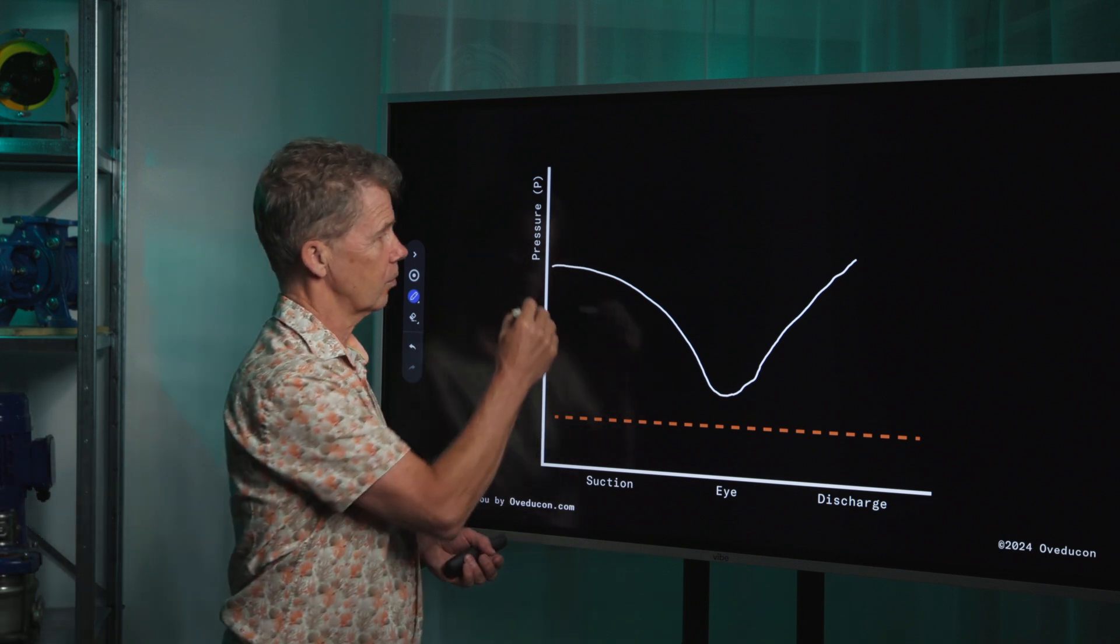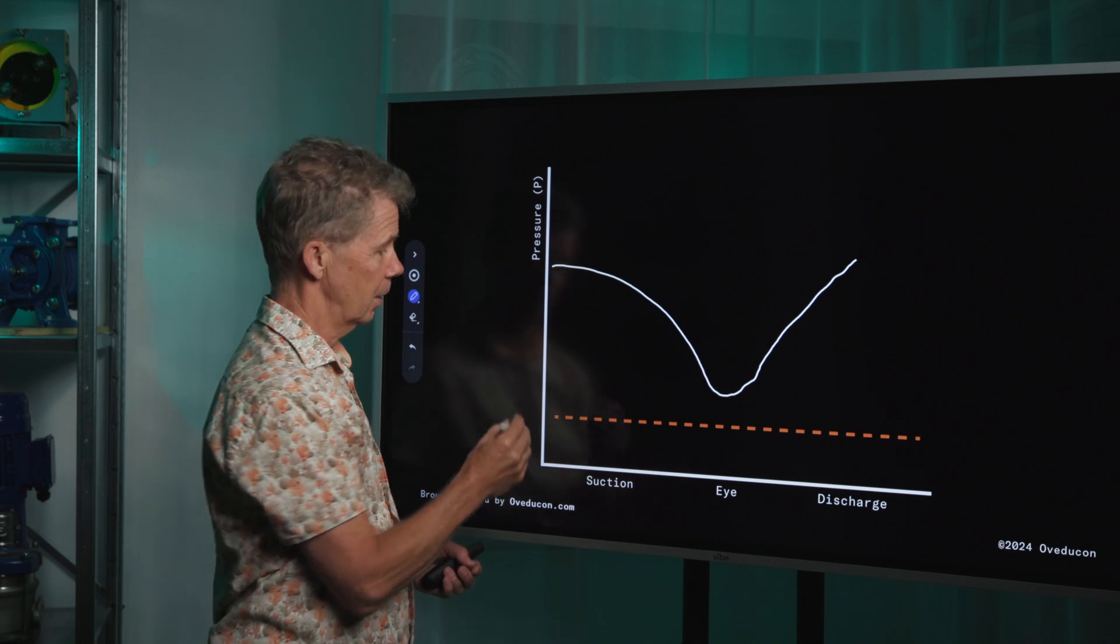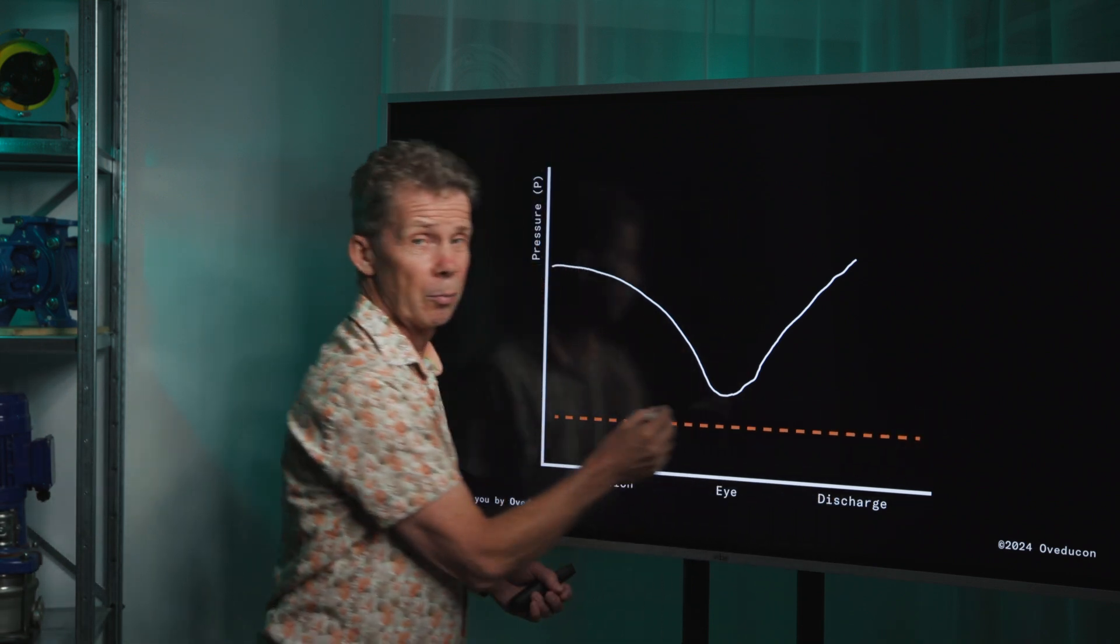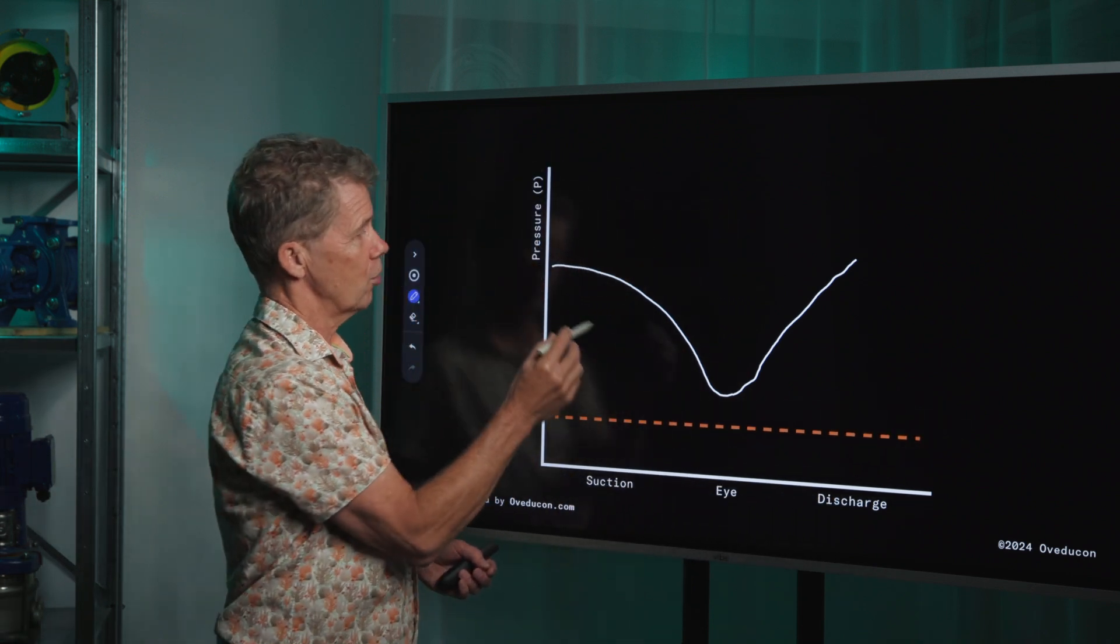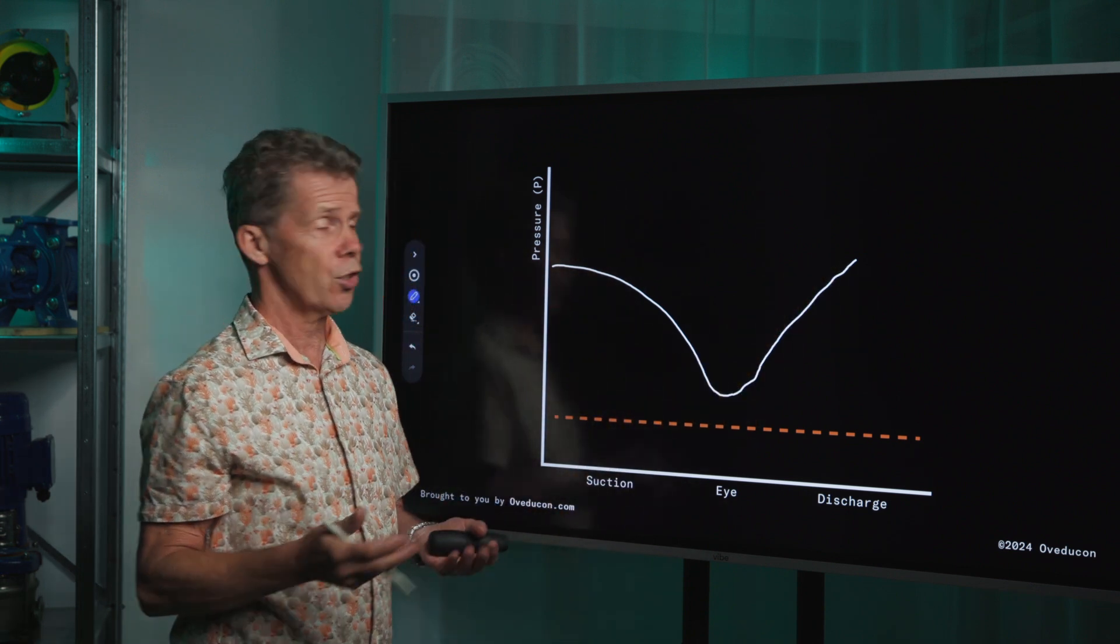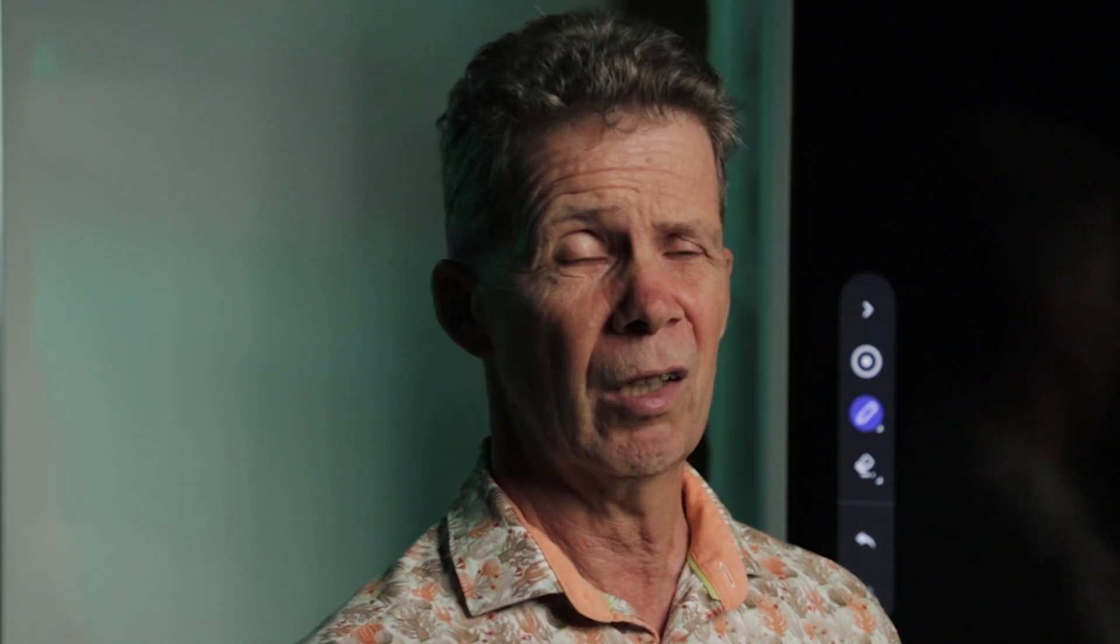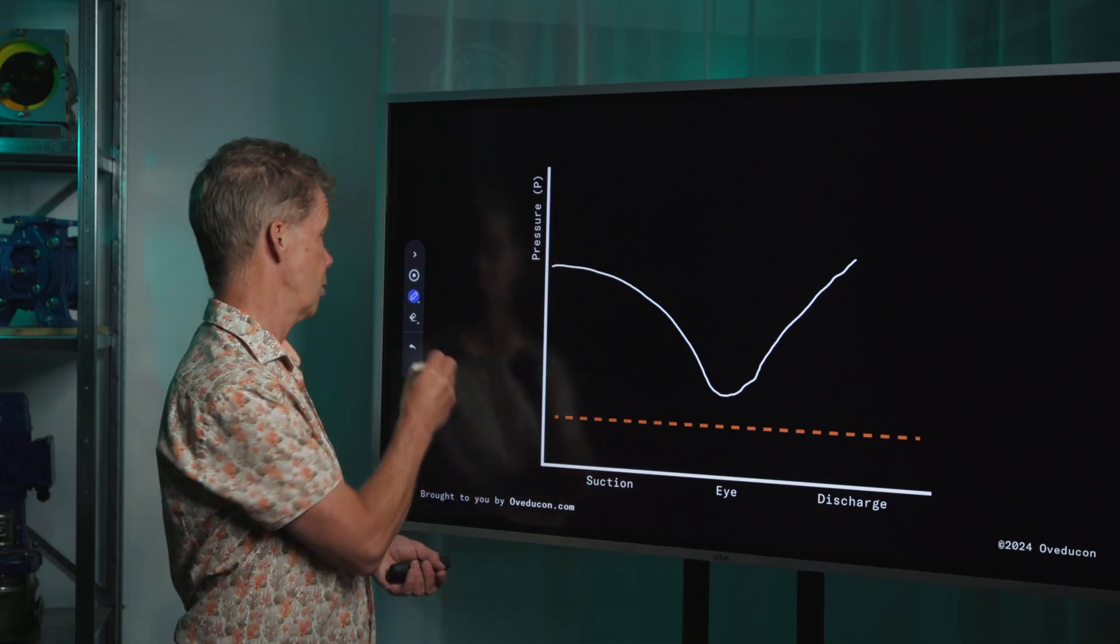In this case, this is the pressure, the suction pressure in your impeller. And this is the vapor pressure line. As long as the pressure in your suction stays above the vapor pressure line, no cavitation vapor bubbles are formed. So you don't have any cavitation.